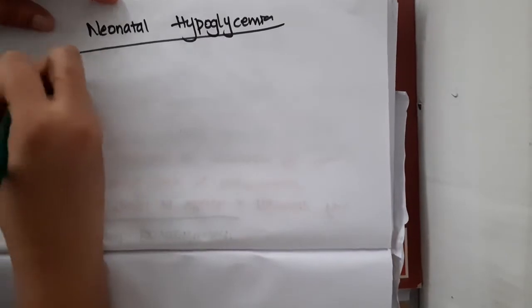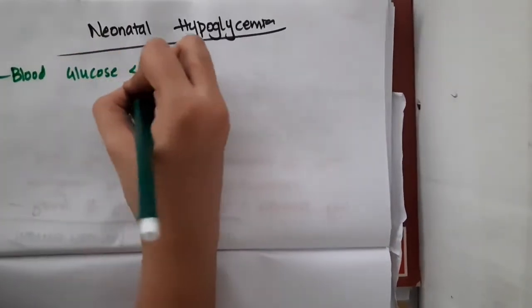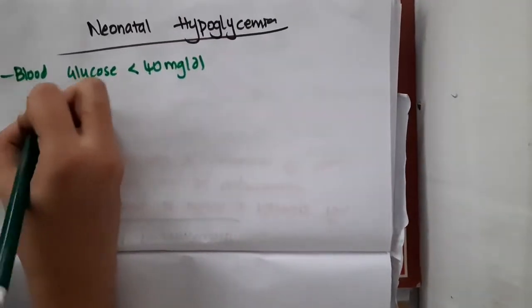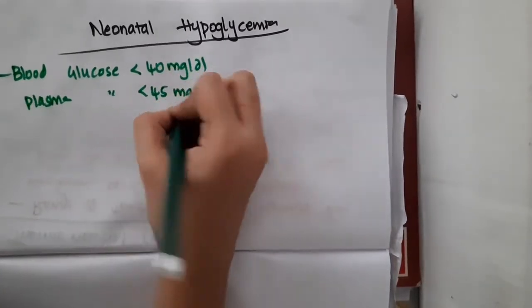In neonatal hypoglycemia, the blood glucose level is less than 40 milligrams per deciliter, and the plasma glucose level should be less than 45 milligrams per deciliter.